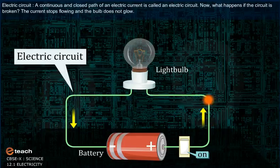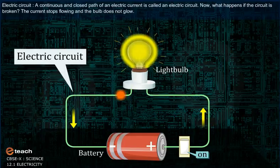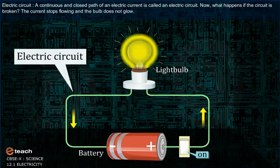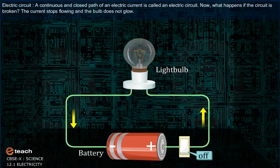Electric circuit. A continuous and closed path of an electric current is called an electric circuit. Now, what happens if the circuit is broken? The current stops flowing and the bulb does not glow.